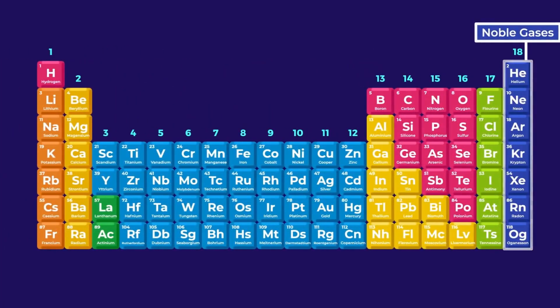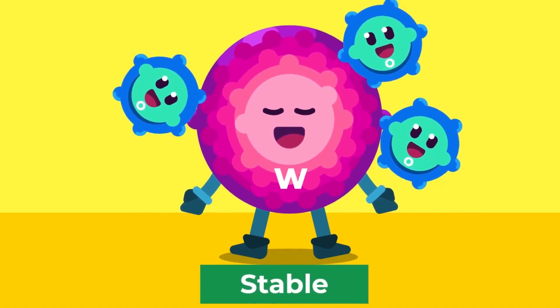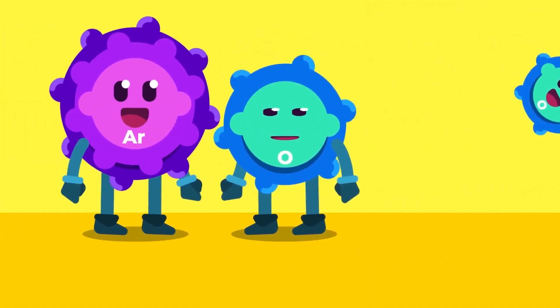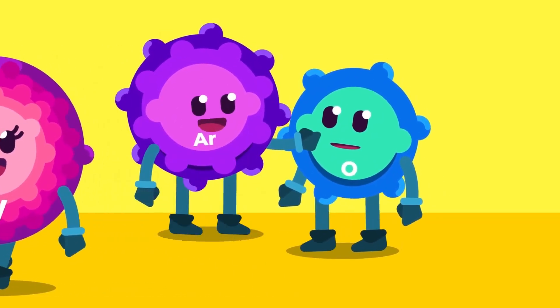The noble gases, also named as group 18 or 0, are the most stable group in the periodic table. All other elements react to attain the stability exhibited by the noble gases. These noble elements are incredibly unreactive and can even be used to prevent reactions from occurring.